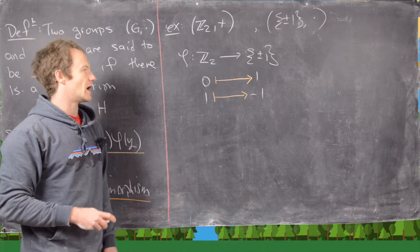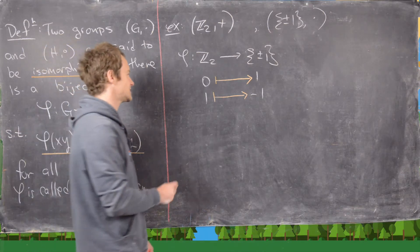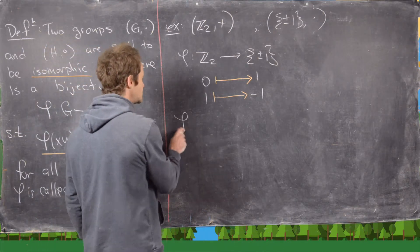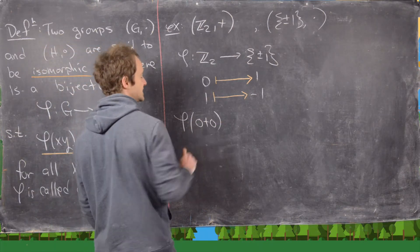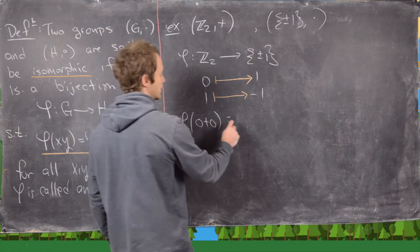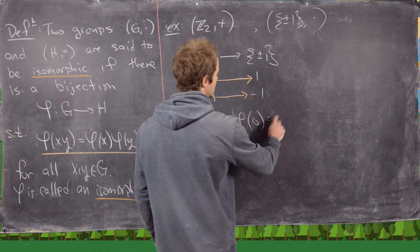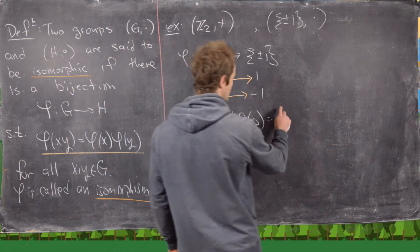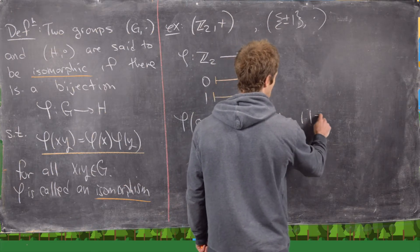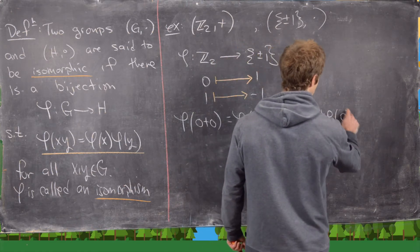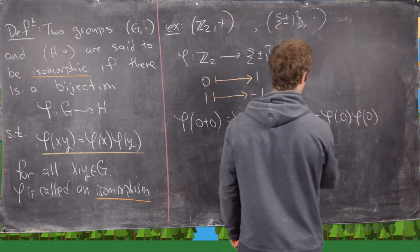Now let's verify this is an isomorphism. We check phi(0 + 0): that's phi(0) = 1, which equals 1 × 1 = phi(0) × phi(0). Good.